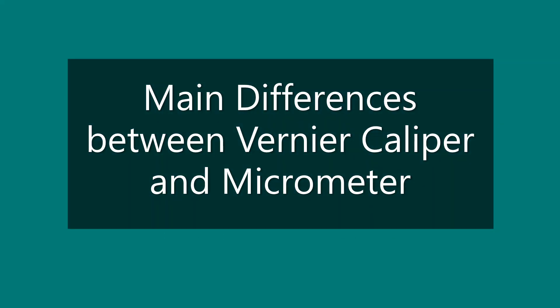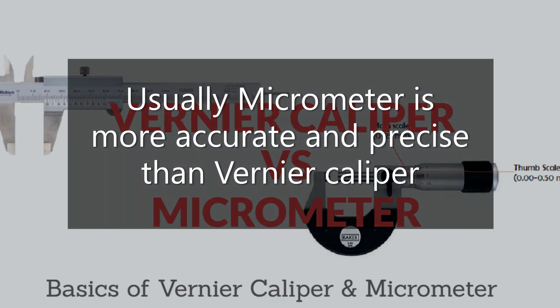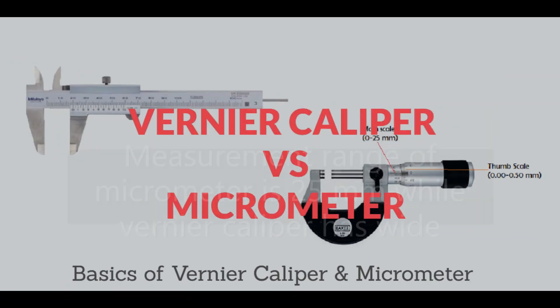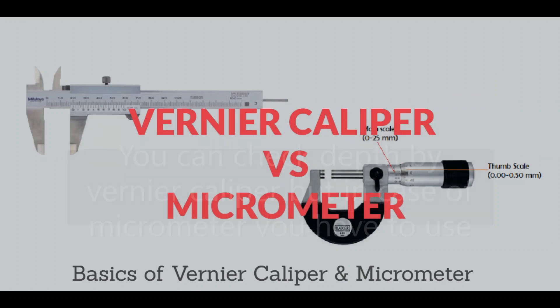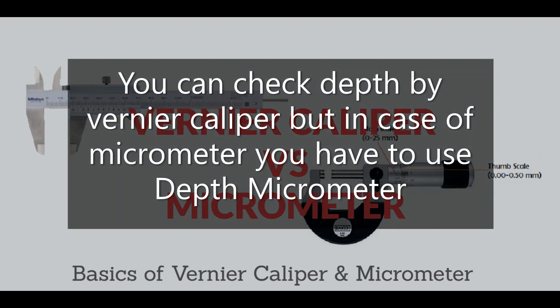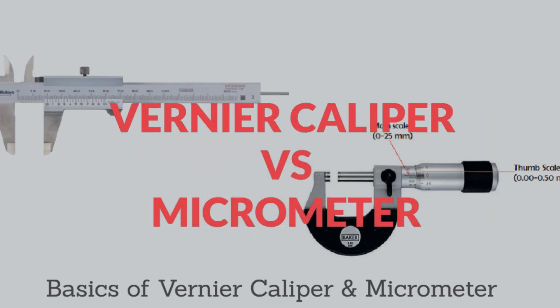The main differences between Vernier Caliper and Micrometer are as follows. Usually, the micrometer is more accurate and precise than Vernier Caliper. The measurement range of micrometer is 25 mm, while Vernier Caliper has a wider range. You can check depth with a Vernier Caliper, but in the case of a micrometer, you have to use a depth micrometer. An inside micrometer is used for measuring inner diameter, but in the case of Vernier Caliper, it is checked by the internal jaw.